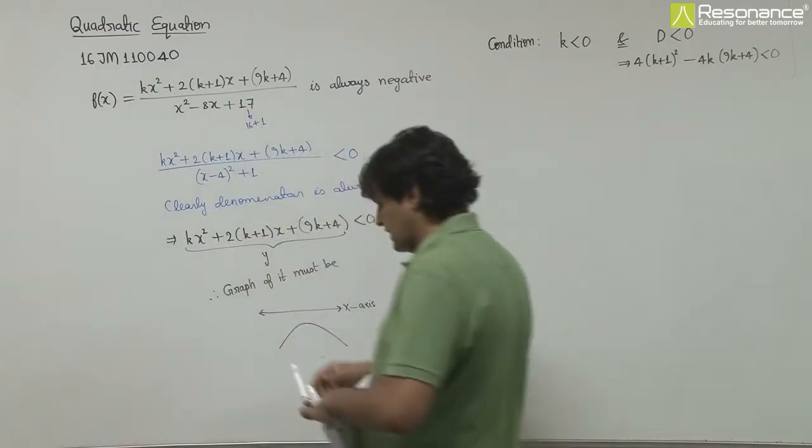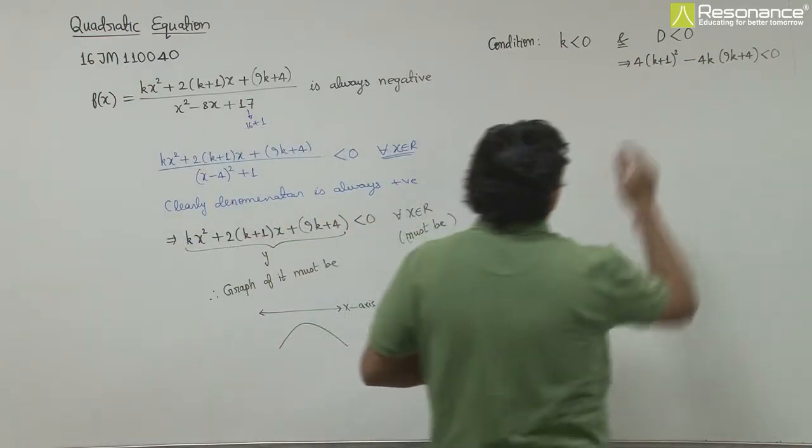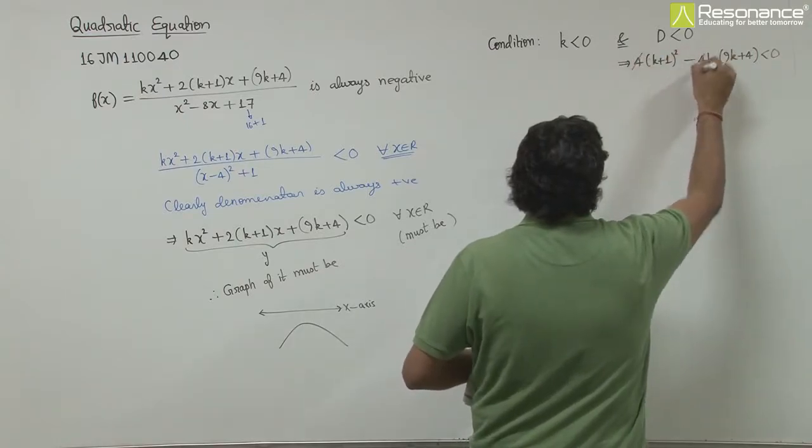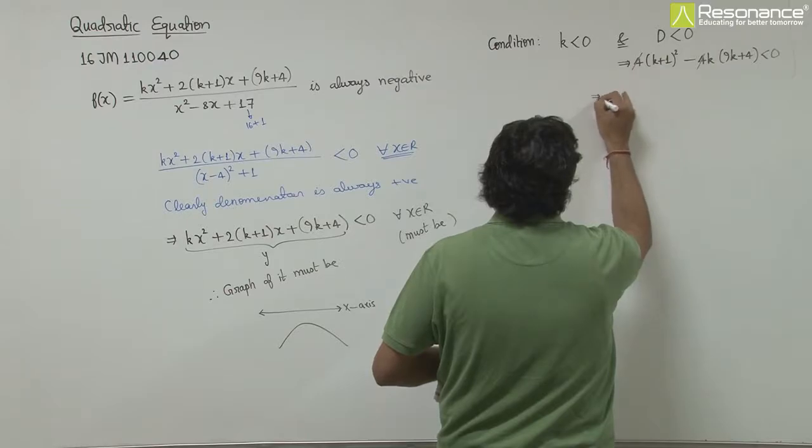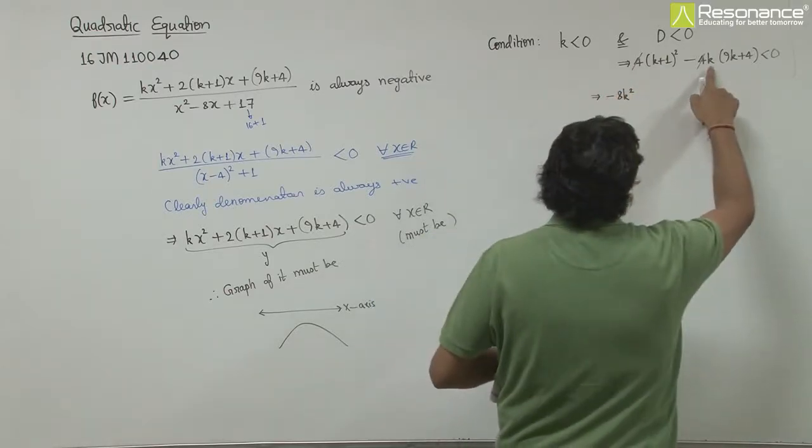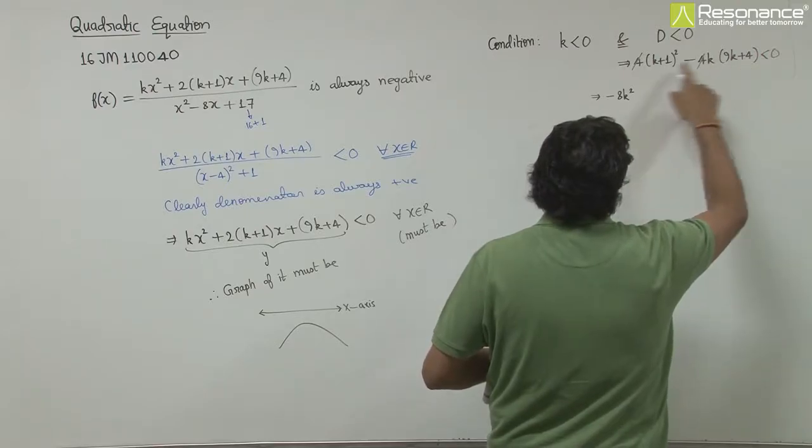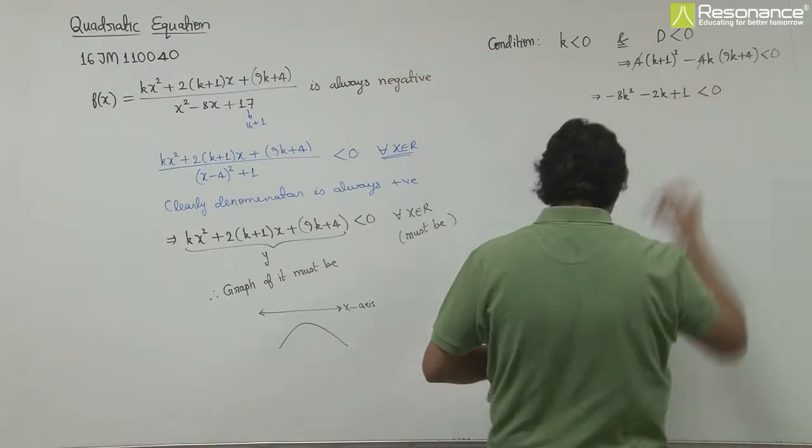Expanding this gives 8k², minus 4k and minus 2k, that is -2k, plus 1, must be less than 0.